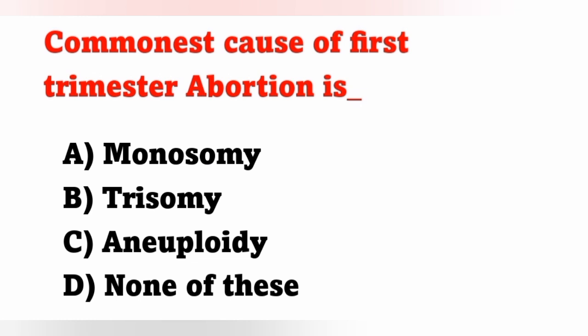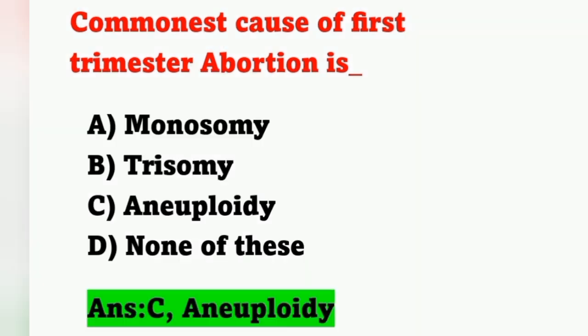Next question: the commonest cause of first trimester abortion. Options — A: monosomy, B: trisomy, C: aneuploidy, D: none of these. The most common cause of abortion in the first trimester of pregnancy is aneuploidy — option C is the correct answer.